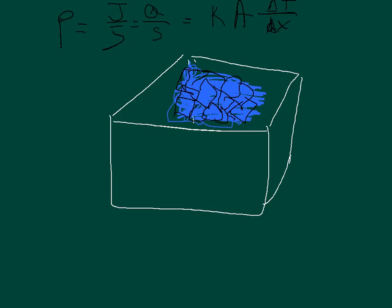In our equation, we have the area, we have the change of temperature, and we have the thickness. The change of X is the thickness of the styrofoam. We have all of that information — we don't have K. But we do have another bit of information: we have the ice, and we're going to assume that the ice is at zero degrees Celsius, so it will just completely melt from ice at zero degrees to water at zero degrees.